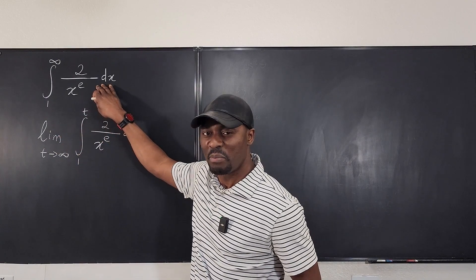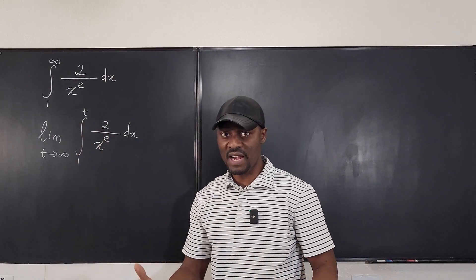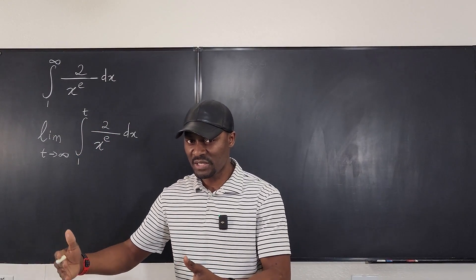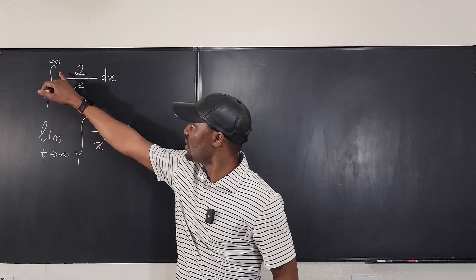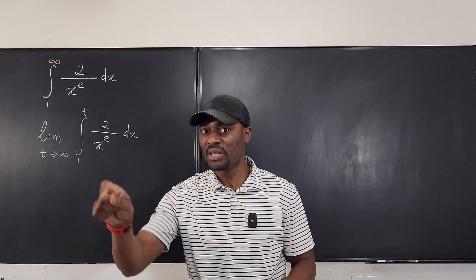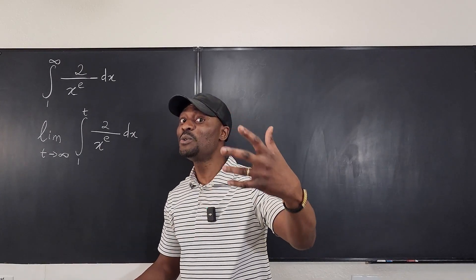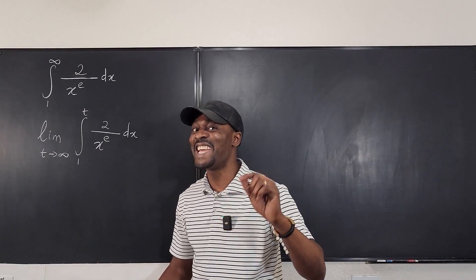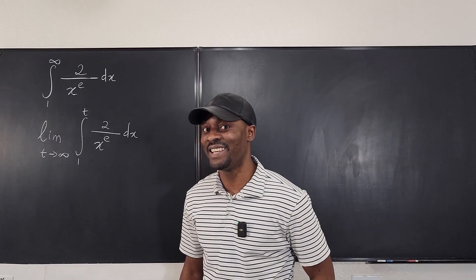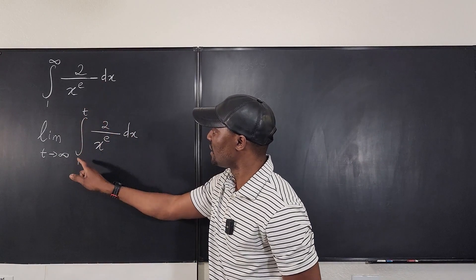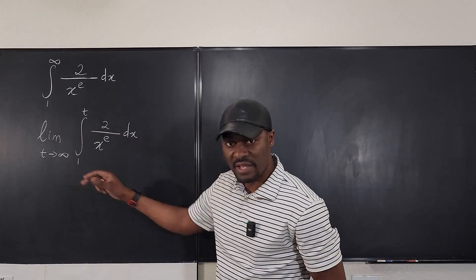We have rewritten this improper integral in a proper manner, because t is supposed to be a finite number — that finite number is approaching infinity, but it's still finite. You cannot plug infinity into an expression; you can only say something goes to infinity. So this is how you translate this, and then you go ahead, take this integral, then take the limit.